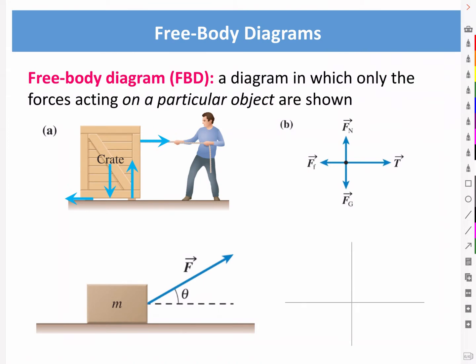One of our primary tools for analyzing force problems is the free body diagram. This enables us to determine the resultant or net force on an object, which determines its motion — for example, determining if it moves with constant velocity or constant acceleration. Let's look at some examples.